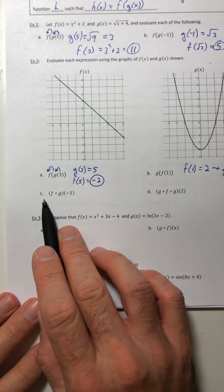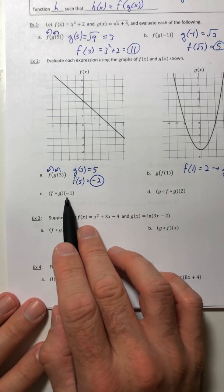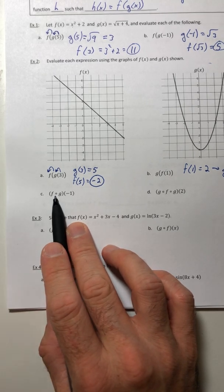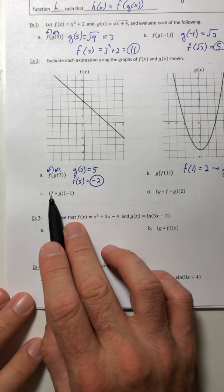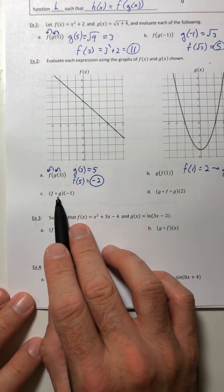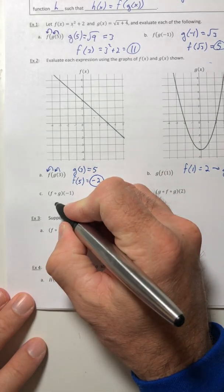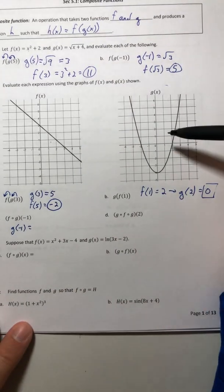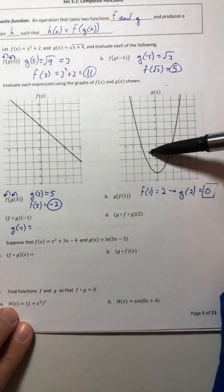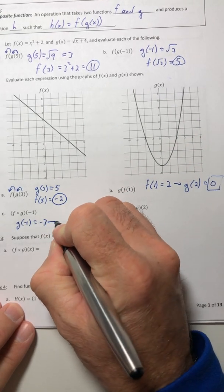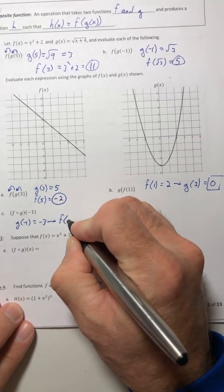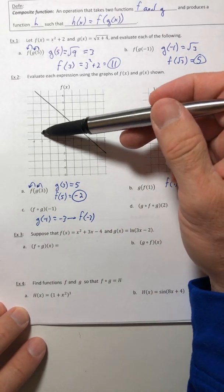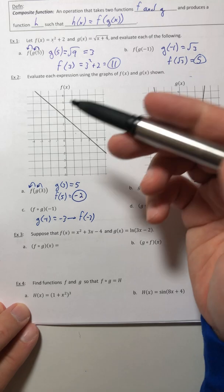Part c has a different notation, it has that little circle. That still means a composite function. That's f(g(-1)). Start the same way. So g(-1), when x is negative one, y is negative three. Then move over to the f graph. When x is negative three, the y value is six.